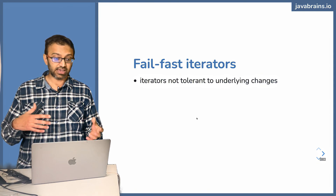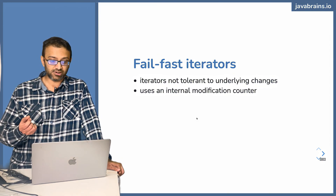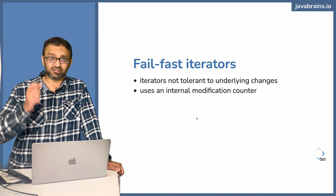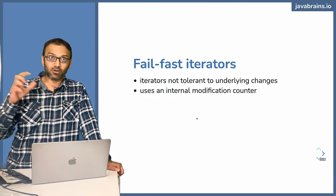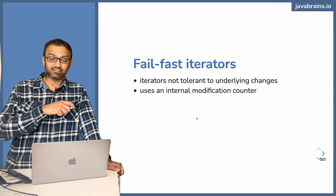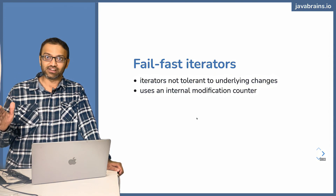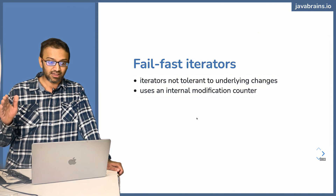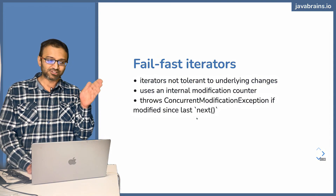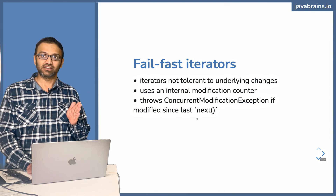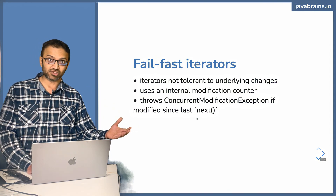The iterator is not okay with this — it's going to throw an exception. The way this works is the collection uses an internal modification counter, something called a mod counter. Anytime you modify the collection, it keeps track of that mod counter. When an iterator is created, it knows what that mod counter is. Every time it does an iteration, it checks: is the mod counter the same? Has nobody modified it? If the mod counter is different, it's going to throw a ConcurrentModificationException.